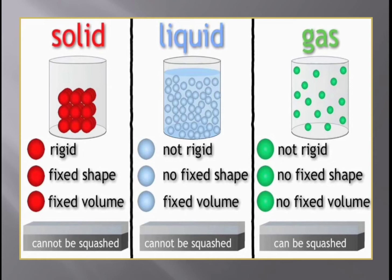If they spill, you can see that milk and water will be flowing. That is because the particles have some space between them, so they can flow.